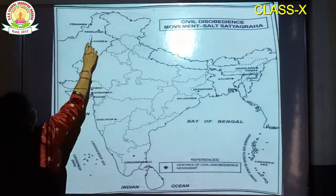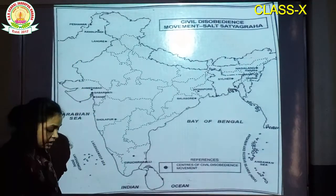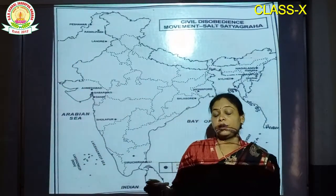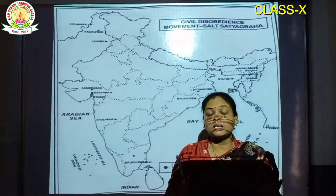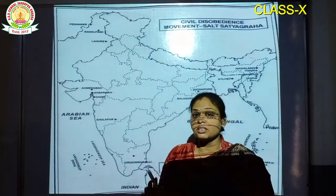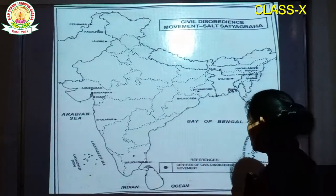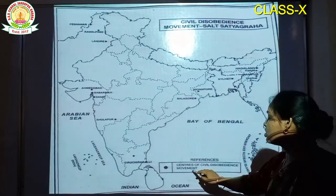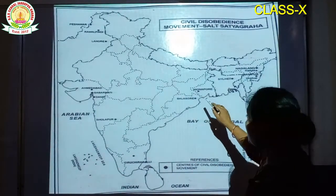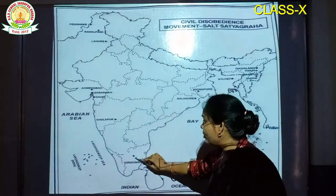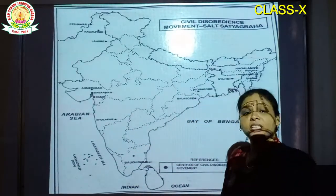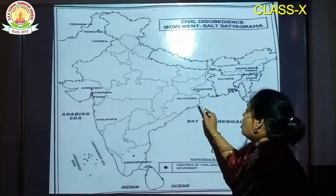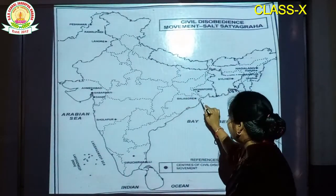Sialkot and different states are there — Lahore, Rawalpindi, Peshawar. You have already seen the study of Peshawar — that Khan Abdul Ghaffar Khan was arrested from there. These all are the centers of the Civil Disobedience Movement. The dotted places you can see — these were the center places where this movement continued. The first phase was run there.